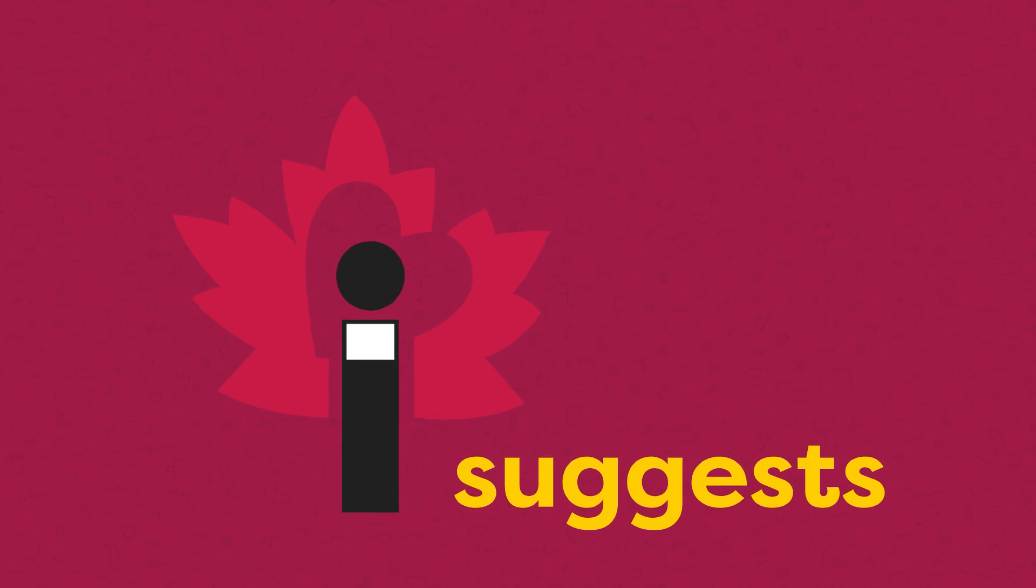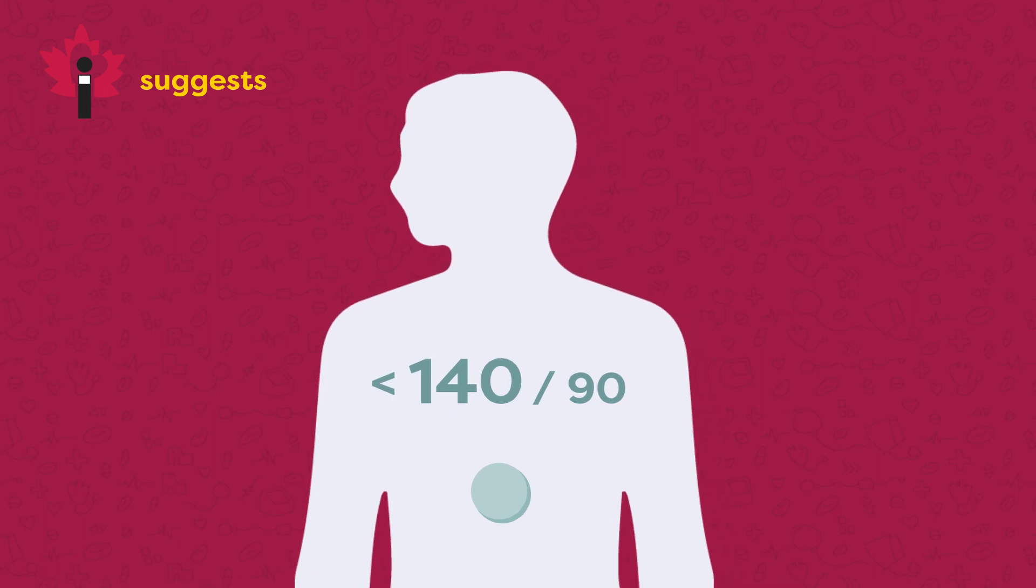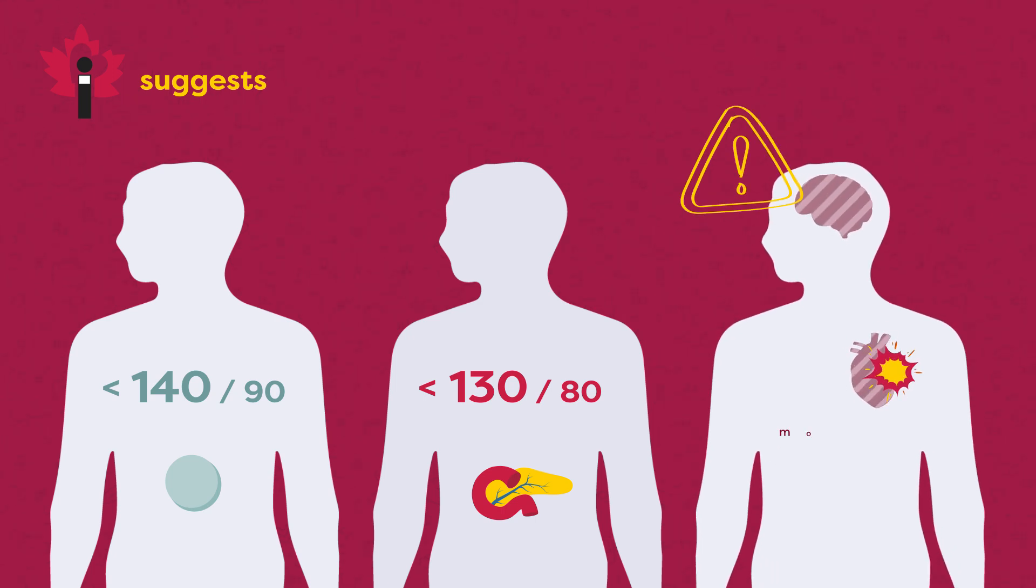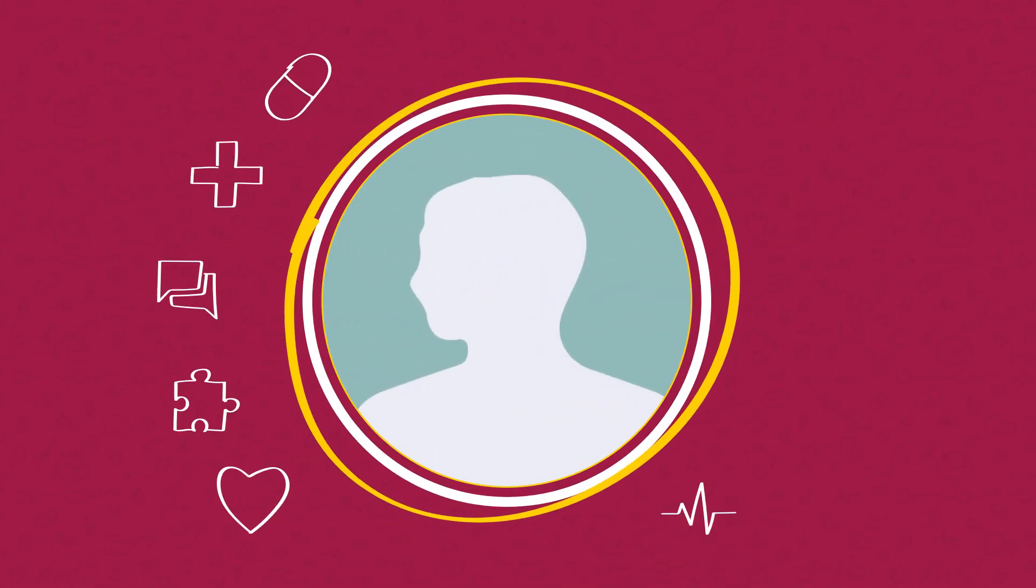Third, the Canadian Hypertension Guidelines suggest most patients who are taking an antihypertensive should aim for blood pressure less than 140 over 90. Patients who have diabetes should aim for less than 130 over 80, and patients with specific risk factors for heart attack and stroke may choose a more intensive systolic goal of less than 120. The patient's overall health and preferences should be considered when choosing a blood pressure goal.